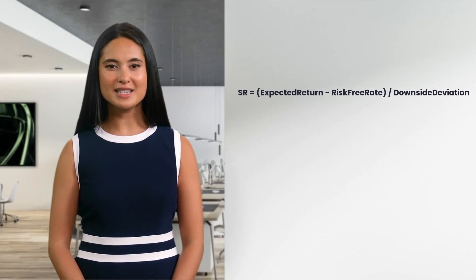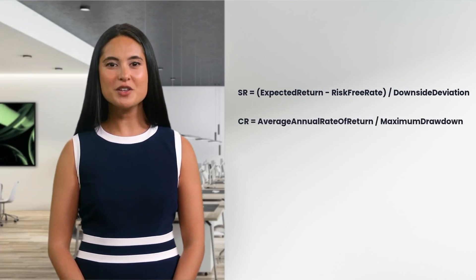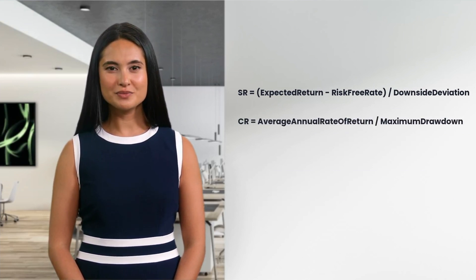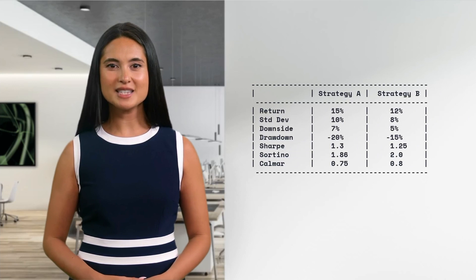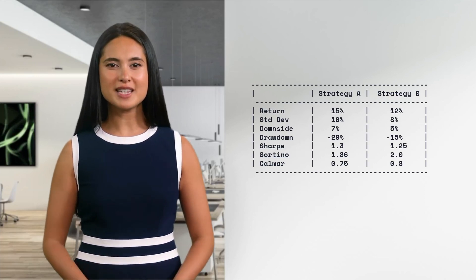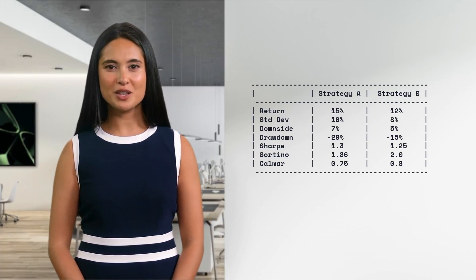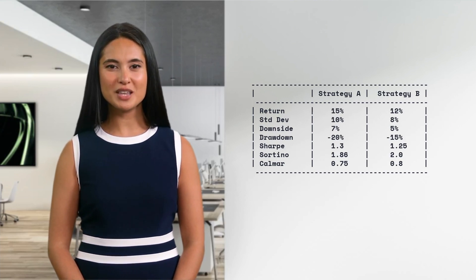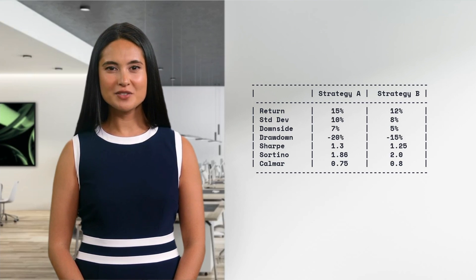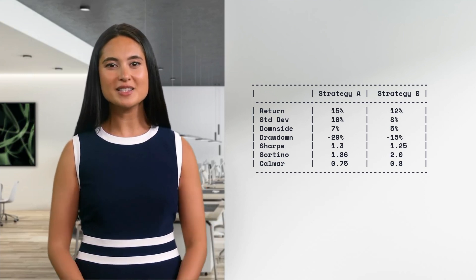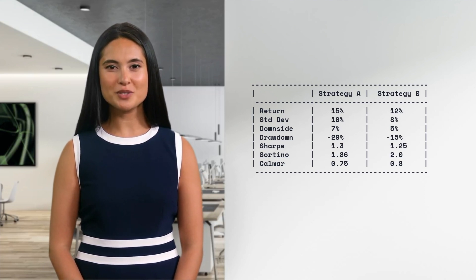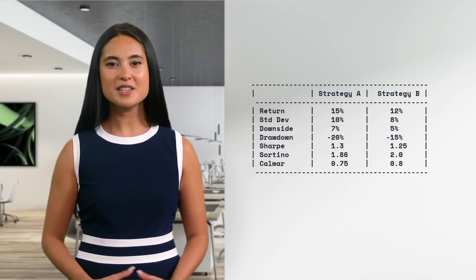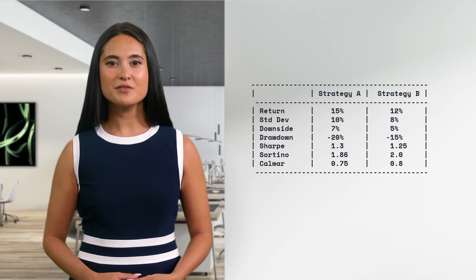To summarize: the Sortino ratio only considers downside volatility, while the Calmar ratio measures return relative to maximum drawdown. Let's now compare two hypothetical strategies using these metrics — Strategy A and Strategy B. Strategy A has an annual return of 15%, a standard deviation of 10%, a downside deviation of 7%, and a maximum drawdown of -20%. This gives a Sharpe ratio of 1.3, a Sortino ratio of 1.86, and a Calmar ratio of 0.8.